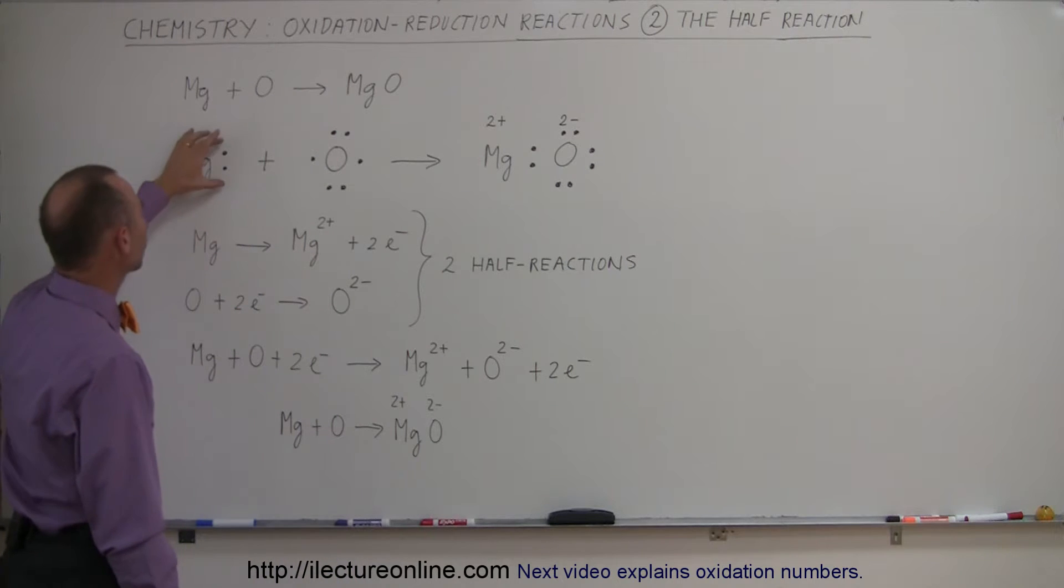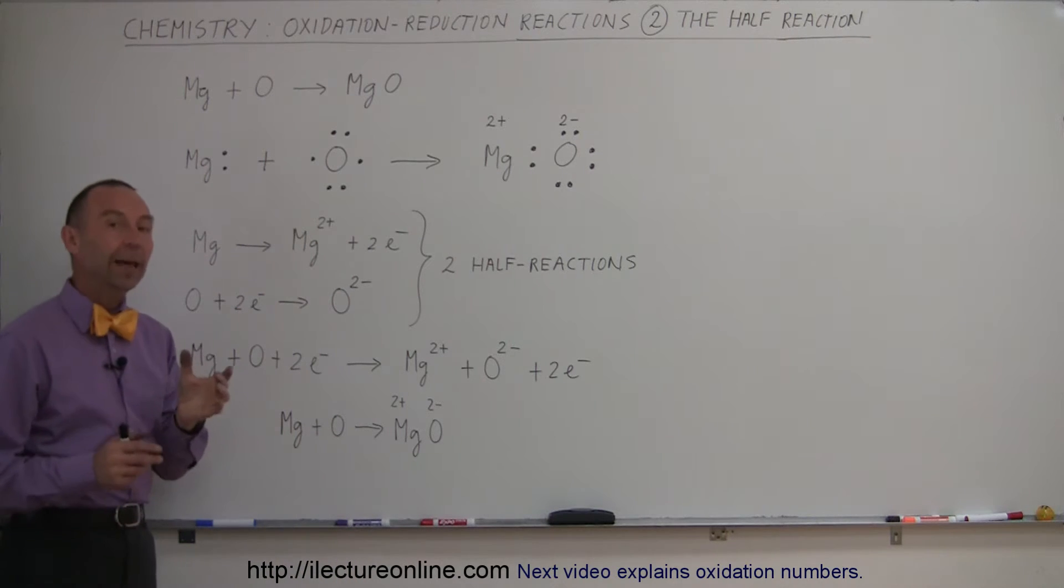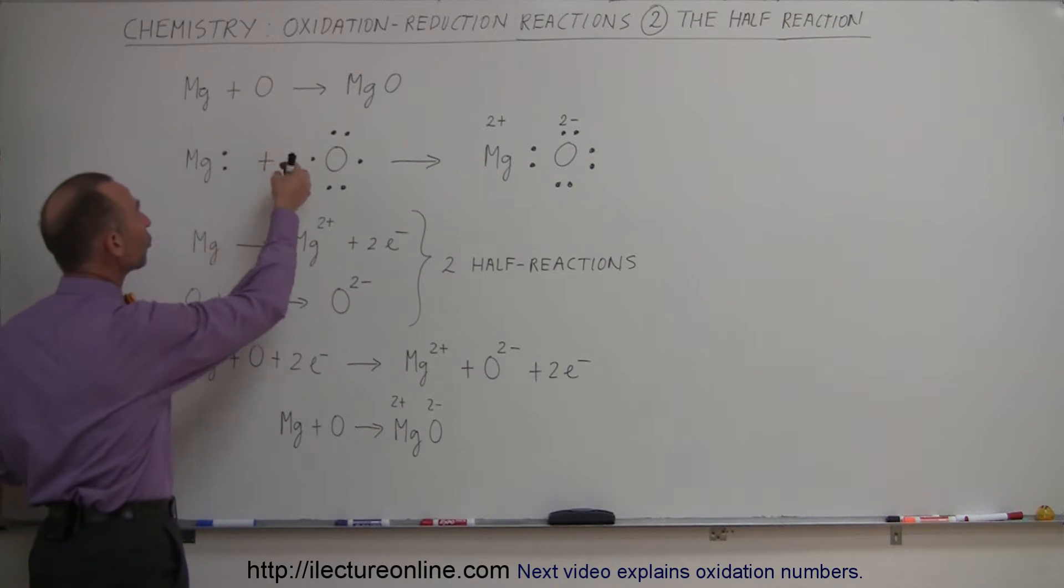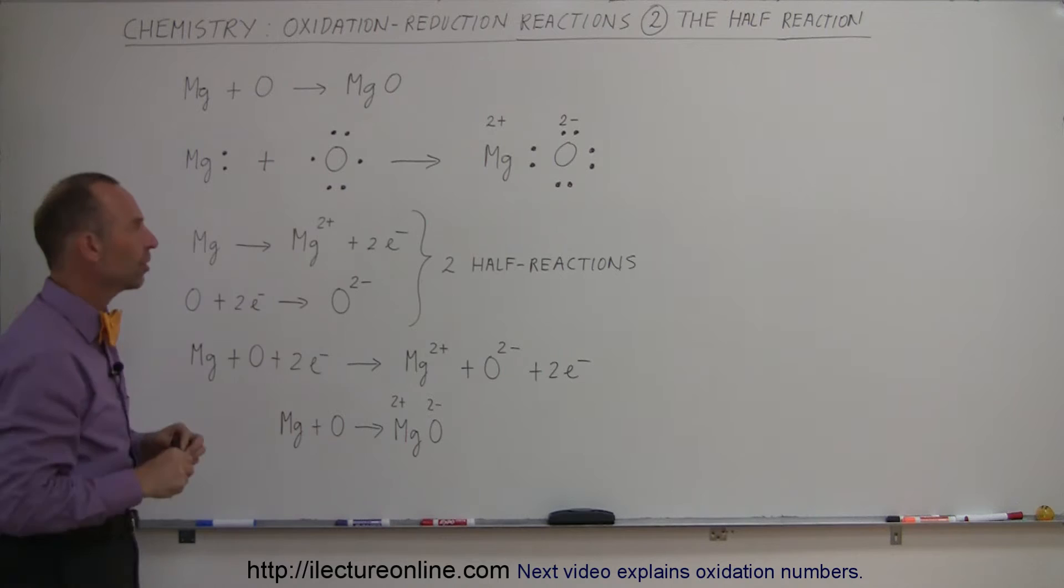Now, magnesium has two electrons in its valence band ready to donate those two electrons because it's relatively easy to pull those two electrons away from magnesium. It does not take a lot of energy.